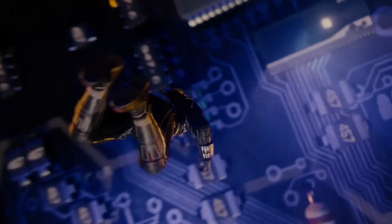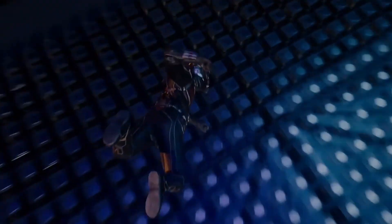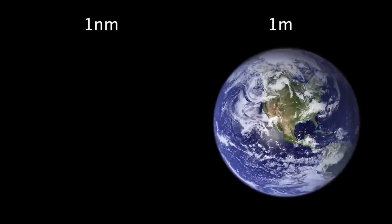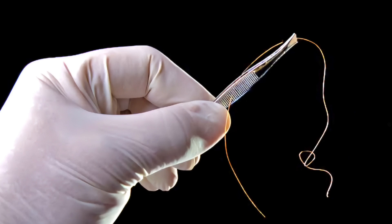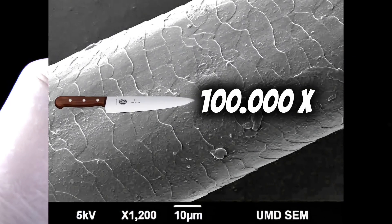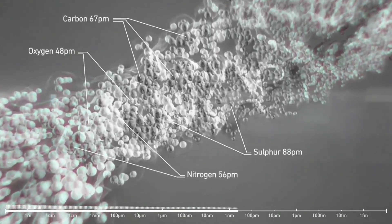But first you need to understand that a nanometer is not just any measurement. One nanometer is one meter divided by a billion. Comparing one meter to one nanometer is like comparing Earth to a marble. A strand of your hair is 100,000 nanometers thick, meaning you'd have to split it 100,000 times to get one nanometer. At this scale we enter the world of atoms and molecules, where strange things start happening.